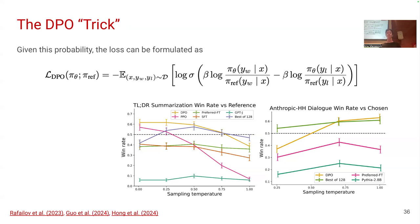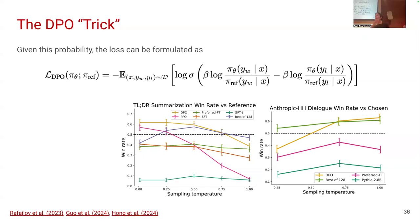This is a nice example of how an algorithm published in academia had massive influence on industry. A new algorithm developed by a PhD student changed what the whole industry is using. Since DPO was introduced there have been many other versions of DPO with the same goal of using preference data directly, and there is ongoing discussion about whether reinforcement learning is still necessary for this space.